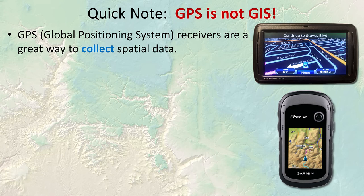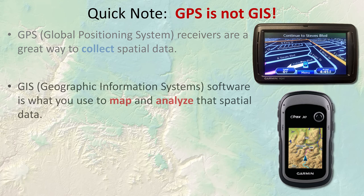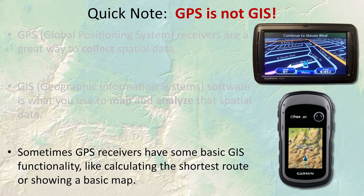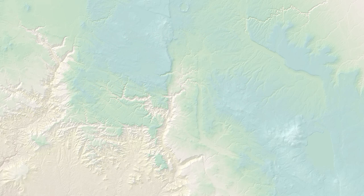GPS stands for Global Positioning System — it's a tool that tells you where you are, so GPS is a tool that allows you to collect data. GIS is the way you map and analyze that data. GPS is the tool for collection and GIS is the tool for analysis and mapping. Sometimes your GPS receiver will have some basic GIS functions inside it — if it calculates the shortest distance from one point to another, it's actually doing a GIS function based on its own GPS coordinates. But truly GIS is a separate thing from GPS.